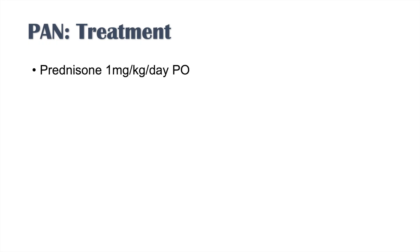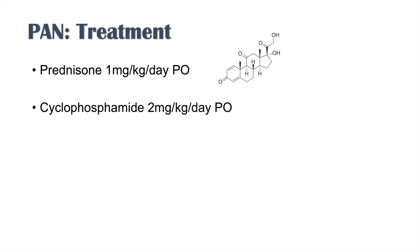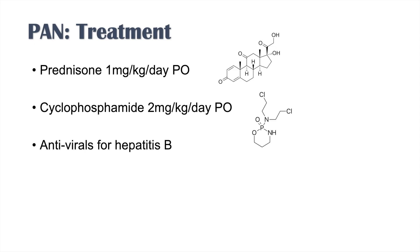Once you've made the diagnosis of polyarteritis nodosa, how do you treat it? Treatment involves the use of prednisone — steroids — and secondly, cyclophosphamide as well. In cases where hepatitis B is associated or may be related to the diagnosis, you can use antivirals to treat the hepatitis B, which can help with the polyarteritis nodosa symptoms.